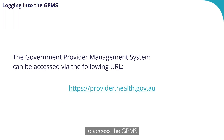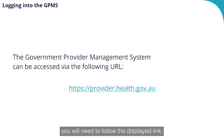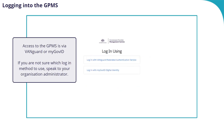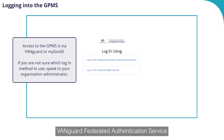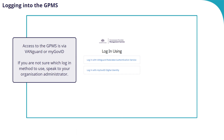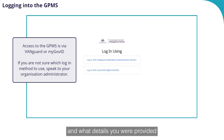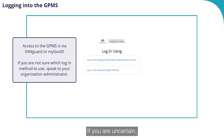To begin with, to access the GPMS you will need to follow the displayed link. By selecting this link, you will be navigated to the login screen. As you can see, you can choose from either Vanguard Federated Authentication Service or myGov ID Digital Identity. The login method you need to select will depend on the organisation or provider you work for and what details you were provided with during your onboarding. If you are uncertain, speak to your organisation administrator.